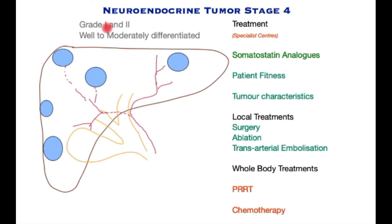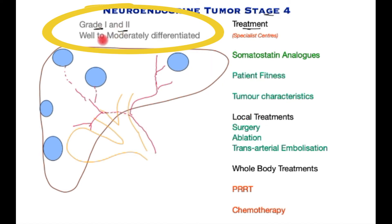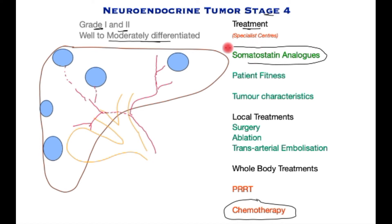Once assessment is completed and we reach the treatment stage, it is important to note that patients with grade 1 disease or early grade 2 disease, which are well to moderately differentiated, have the best prognosis and benefit most from aggressive treatment. Unfortunately for grade 3 disease, chemotherapy may be the only viable option. Almost all patients will benefit from somatostatin or one of its analogs, a naturally occurring hormone that fixes onto tumor sites, reduces hormone output, stabilizes further multiplication, and at times may cause tumor regression.